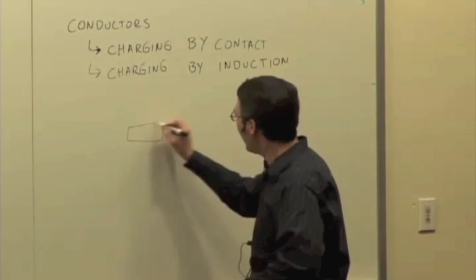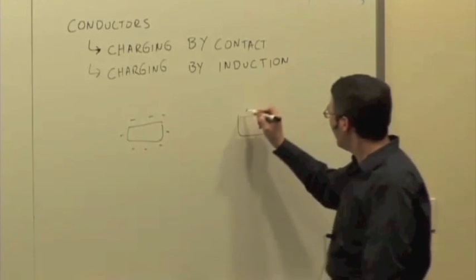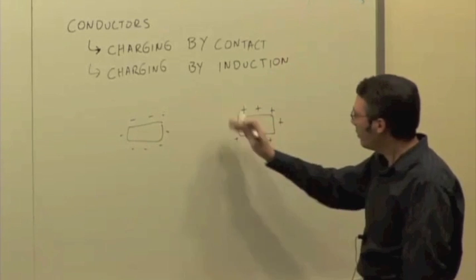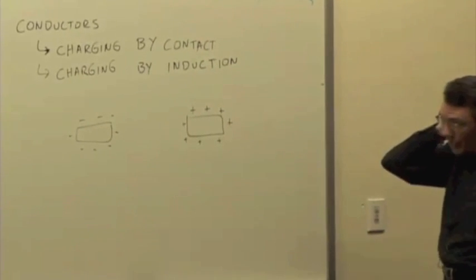And now you have a case where there is a net charge on one, an opposite net charge on the other. But the total charge, if you add up the total charge of the system, it stays the same.